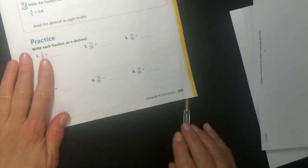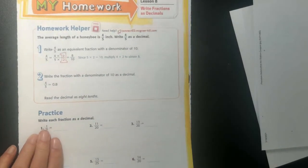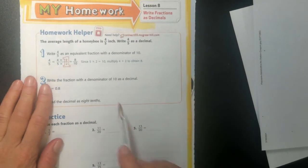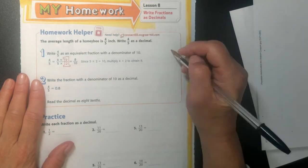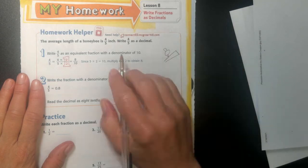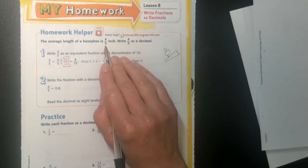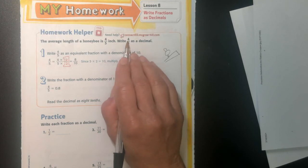Alright, so we're doing page 599 and 600 for math homework. So they are talking about the average length of a honeybee, right? They took a little bee and measured him with a ruler to see how long he was. He is four-fifths of an inch. He's almost one whole inch. But now I have to write four-fifths as a decimal.